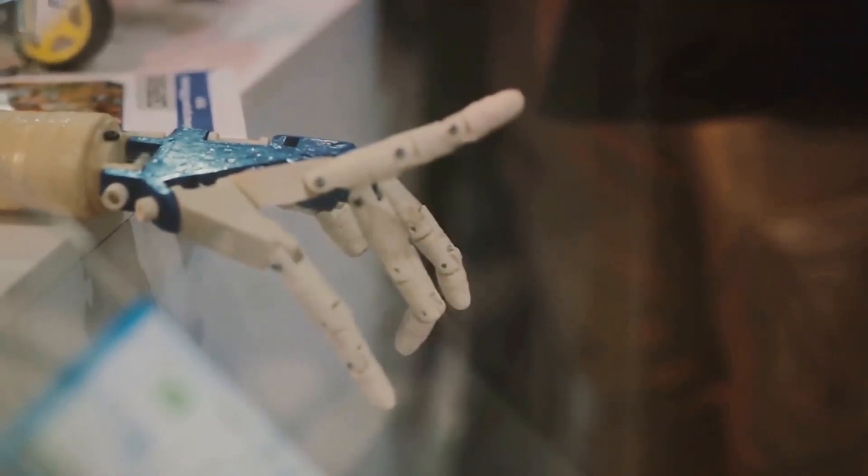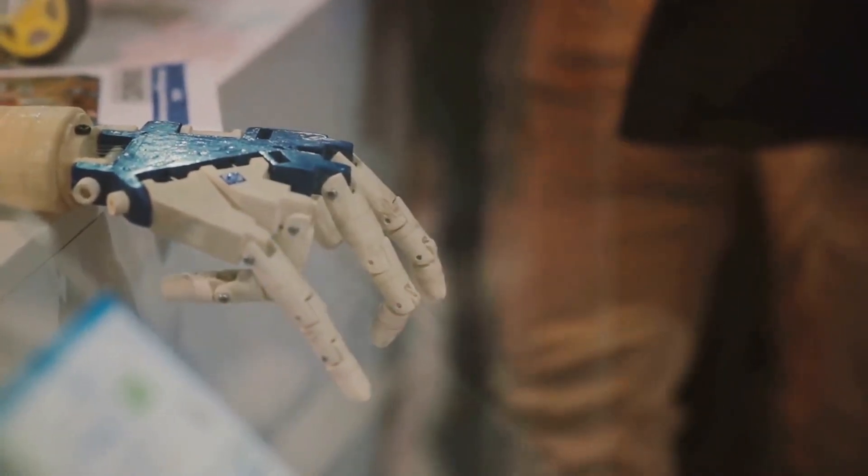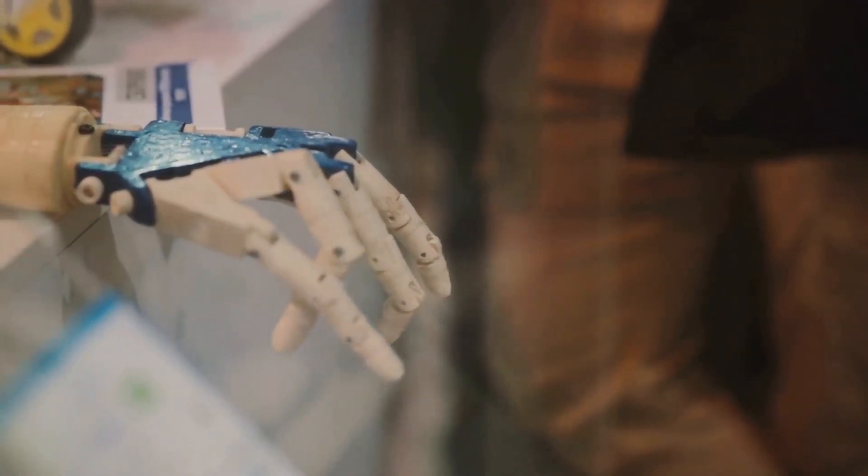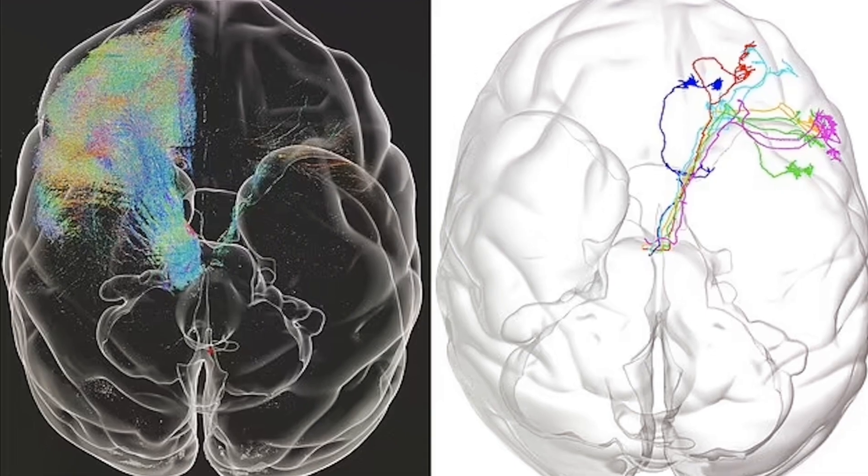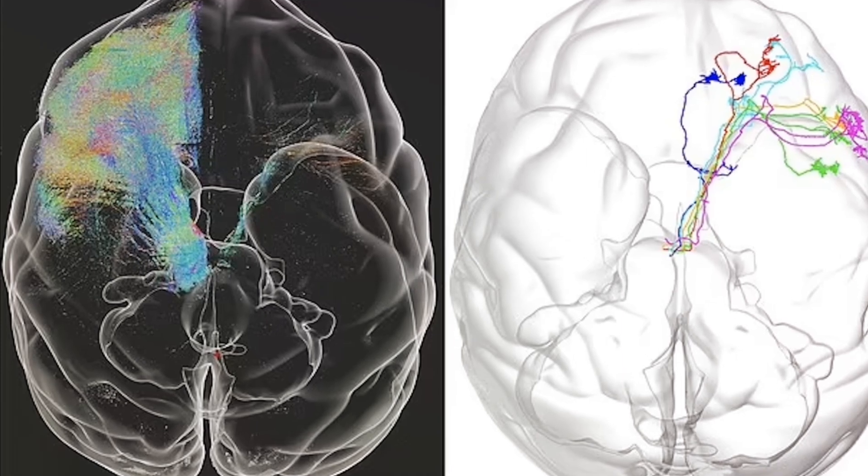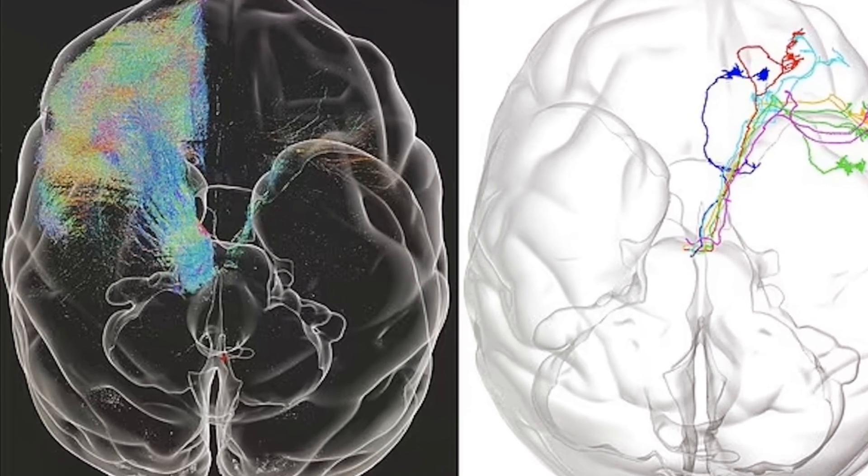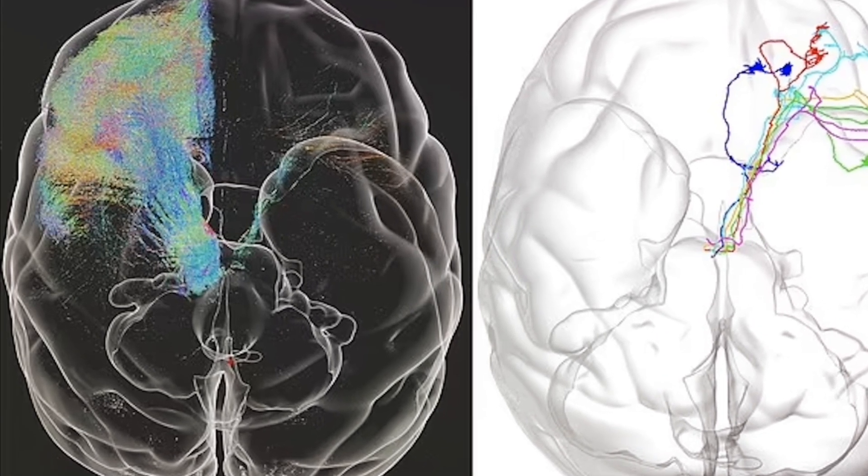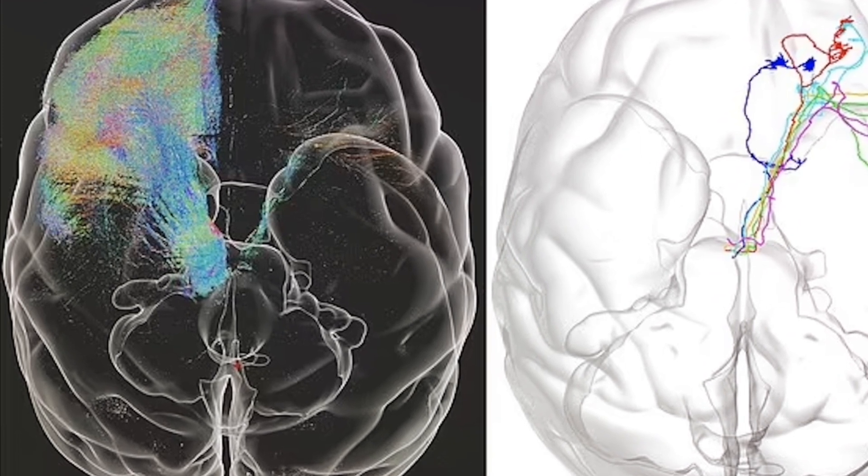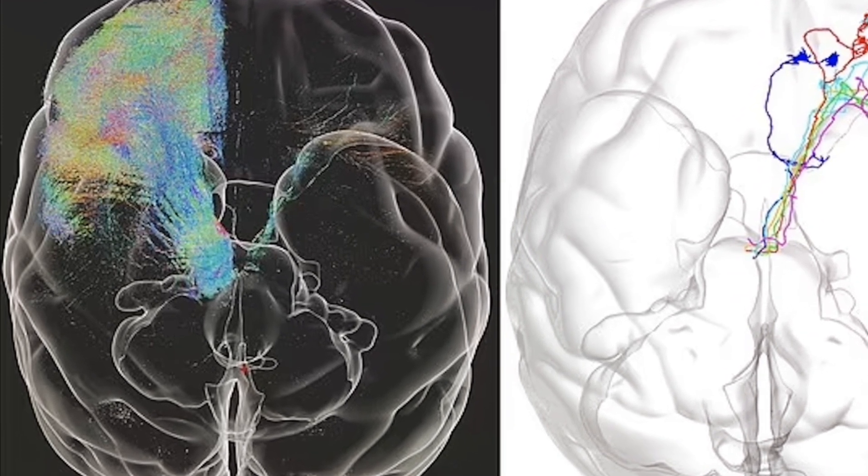In the demonstration, the monkey, with its hands restrained, used the interface to move a robotic arm and grasp a strawberry. The system involves soft electrode filaments implanted in the monkey's brain, a technology that not only highlights China's advancements, but also its ability to innovate in this field.